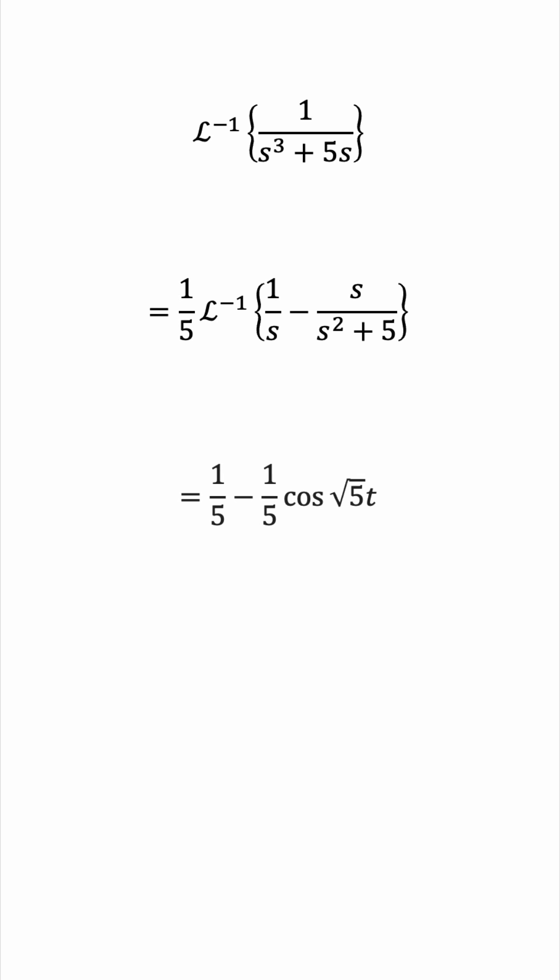So this will be the result: one-over-five minus one-over-five cosine radical five t. And that's the final answer.